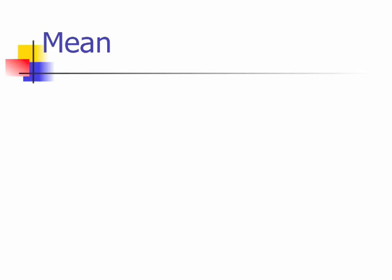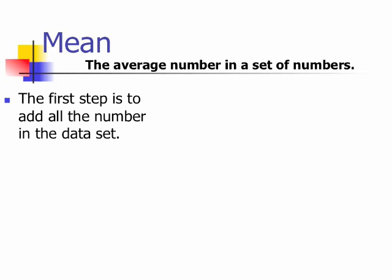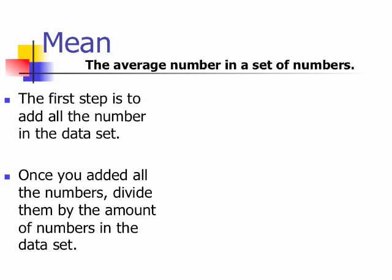Mean is the average number in a set of numbers. To find the mean, the first step is to add all the numbers in the data set. Once you've added all the numbers, divide them by the amount of numbers in the data set.